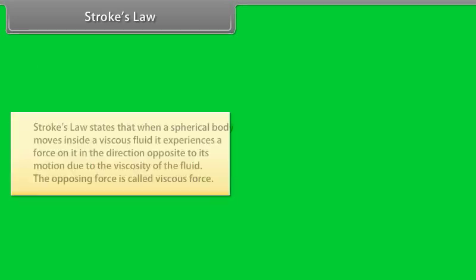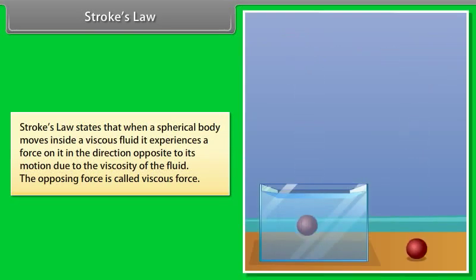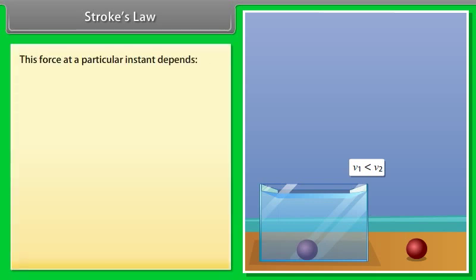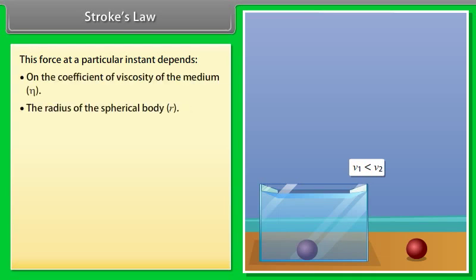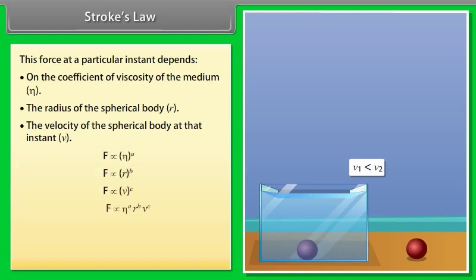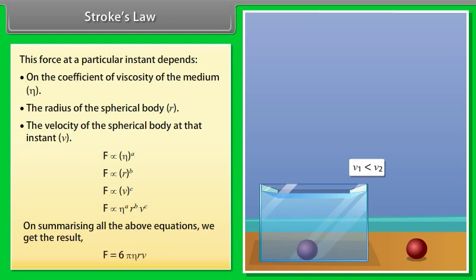Stoke's law. Stoke's law states that when a spherical body moves inside a viscous fluid, it experiences a force on it in the direction opposite to its motion due to the viscosity of the fluid. The opposing force is called viscous force. This force at a particular instant depends on the coefficient of viscosity of the medium, the radius of the spherical body, and the velocity of the spherical body at that instant. Force is directly proportional to eta, radius, and velocity. On summarizing all the above equations we get F equals 6 pi times eta times R times V.